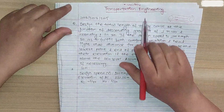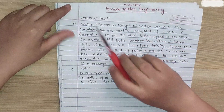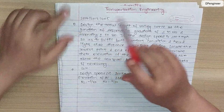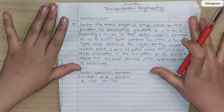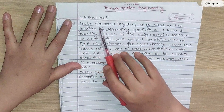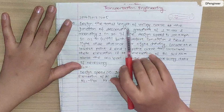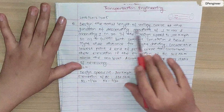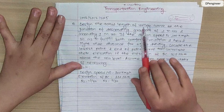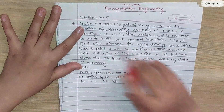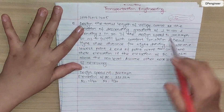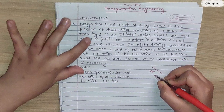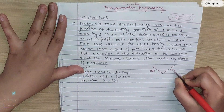Hello, I am in transportation engineering. This is a 2016, 2017, and 2015 numerical on valley curve. We will design the total length of valley curve at a junction of a descending grade of 1 in 40 and an ascending grade of 1 in 30.